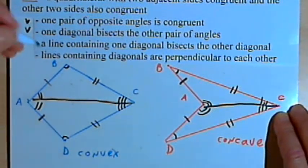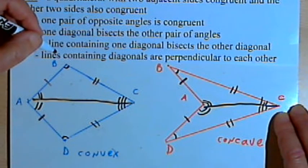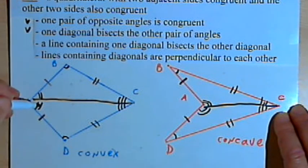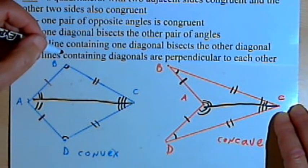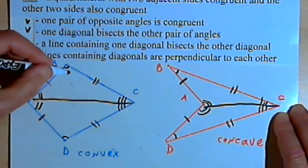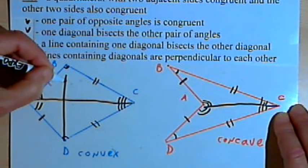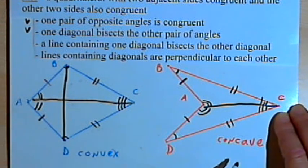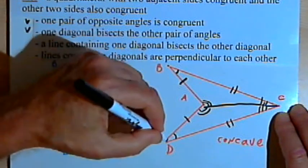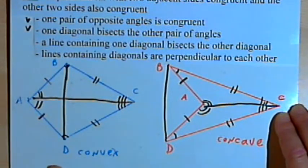The next property says a line containing one diagonal bisects the other diagonal. Well, in the case of the convex kite, we could just say one diagonal bisects the other diagonal. So I'm going to draw the other diagonal. And we'll go on and prove that in a second. For the concave kite, when I draw the diagonal BD, something kind of strange happens.